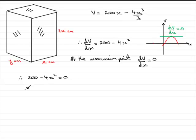And if we add 4x squared to both sides, we get 4x squared equals 200. Divide by four, and you end up with x squared equals 50.